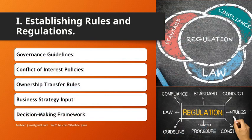Establishing rules and regulations. Governance guidelines set out policies for governance, including decision-making authority. Conflict of interest policies define boundaries to prevent conflicts of interest. Ownership transfer rules detail rules for transferring ownership within the family. Business strategy input involves family members in strategy discussions with formal procedures. Decision-making framework provides a structured approach to making key business decisions.